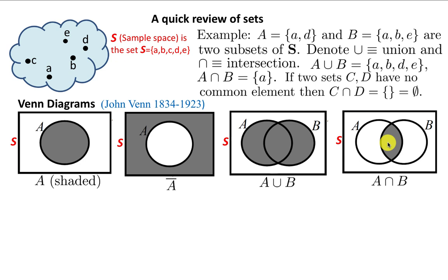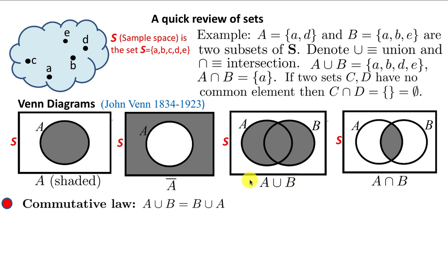From here, one can easily get various relations between sets. There's the commutative law which says that A ∪ B = B ∪ A — the order doesn't matter. Similarly, A ∩ B and B ∩ A are exactly the same. It's very trivial because A and B is the same as B and A.